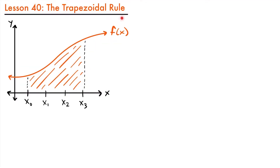Welcome back. Today we're going to be talking about the trapezoidal rule, which is another way that we can approximate the area under a function or under a curve. Previously when we approximated this area, we used rectangles — whether with right endpoints, left endpoints, or midpoints — and that was the only shape we ever used to approximate that area.